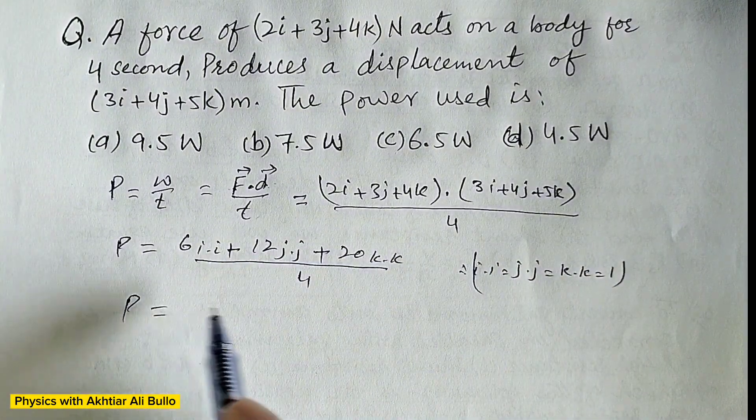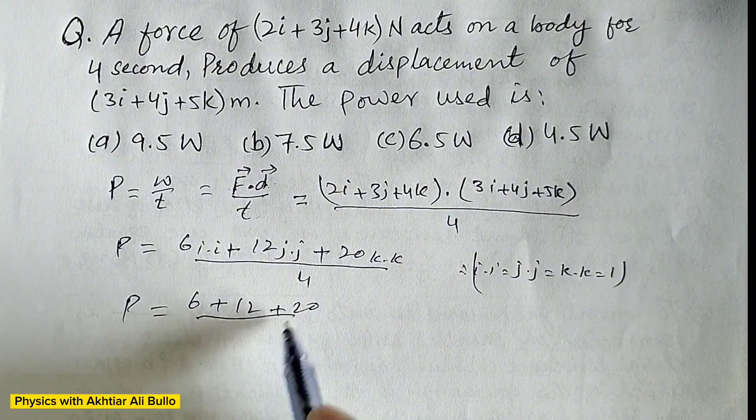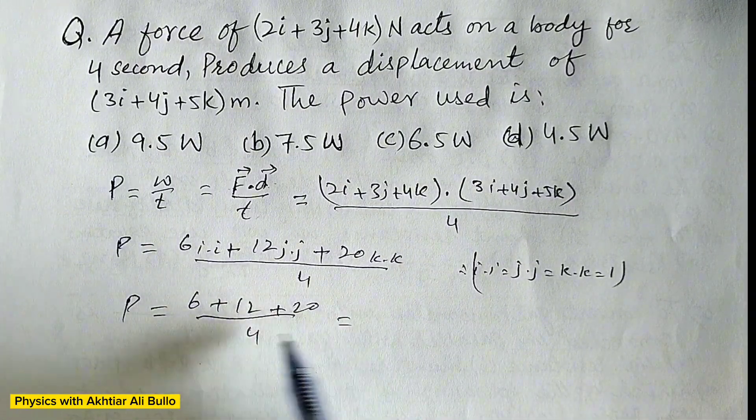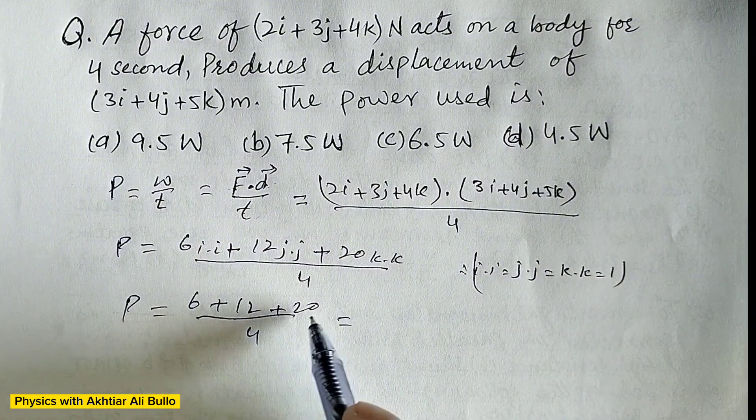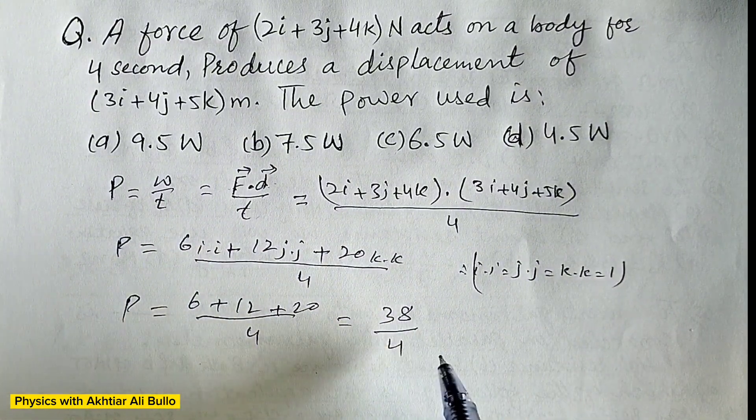So power will be 6 plus 12 plus 20 divided by 4. So 6 plus 12 plus 20, it will be 38 upon 4.